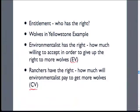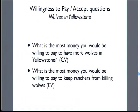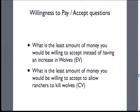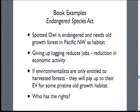So they'll converge on the same number, but there are different ways to frame it. The compensating variation question is: what's the most money you'd be willing to pay to have more wolves in Yellowstone? The equivalent variation question is: what's the money you'd be willing to pay to keep wolves from getting killed by ranchers? They're getting at the same thing but have different accuracy in terms of economic measurement. Another framing: EV is the least money you'd accept instead of having an increase in wolves — like wolves are going to be capped, what would you accept to stop at that cap? And what's the least you'd accept to allow ranchers to keep killing wolves?